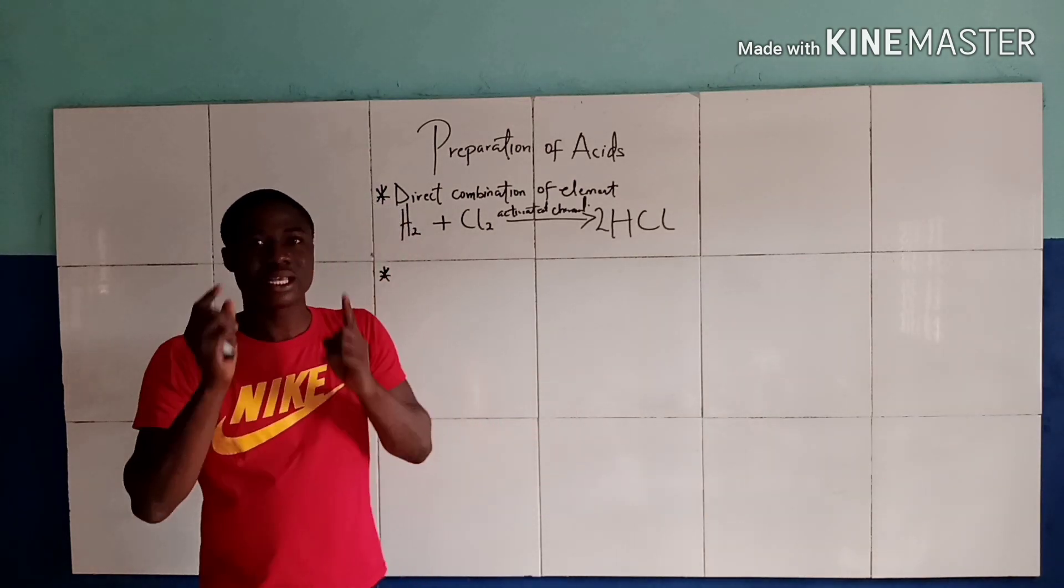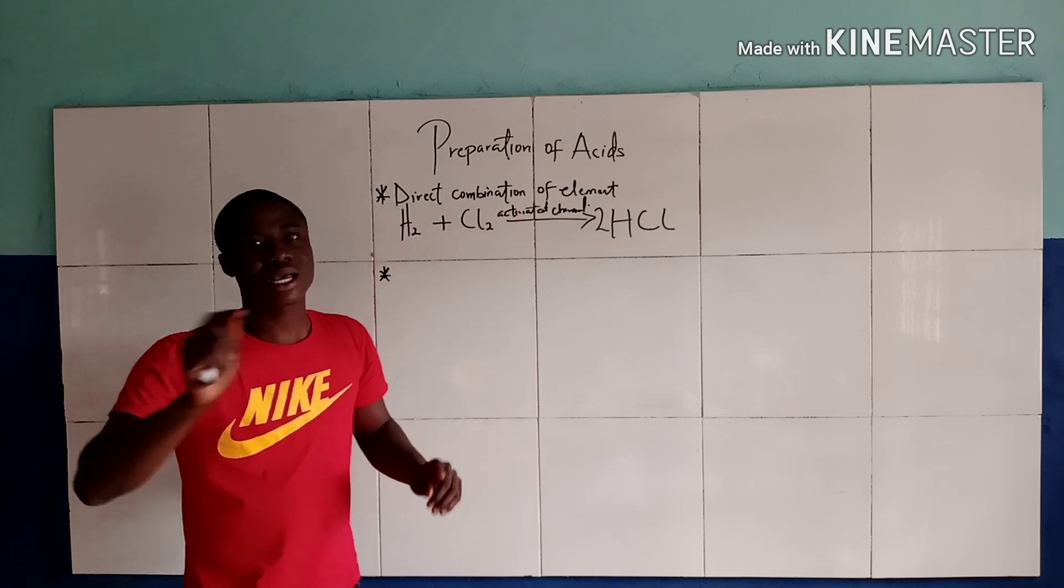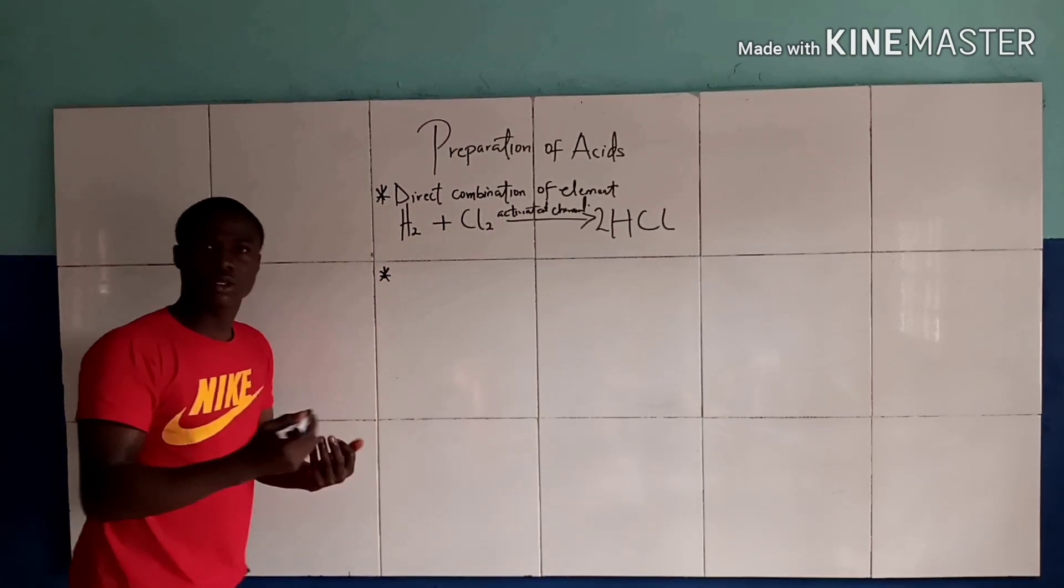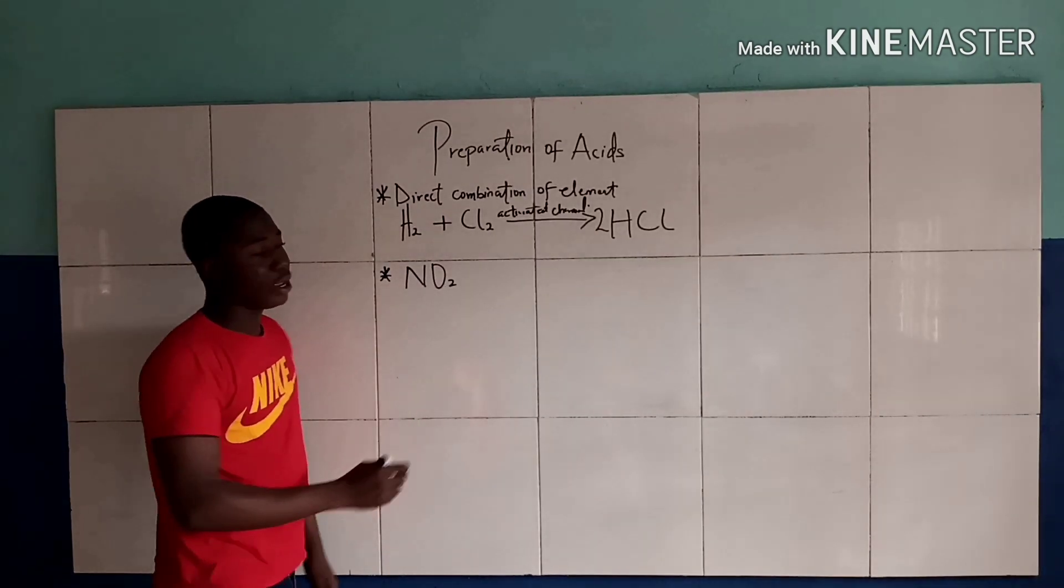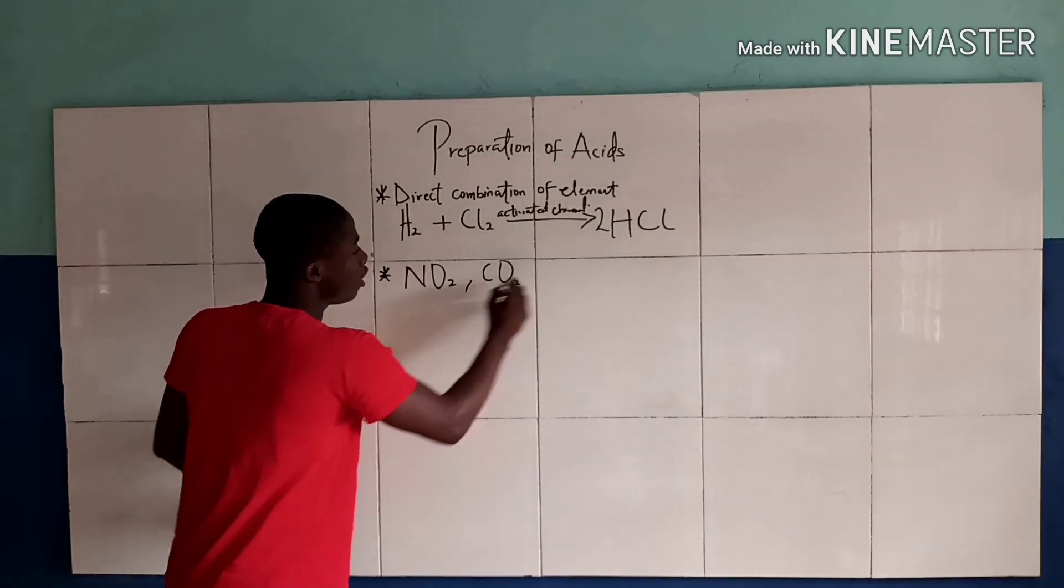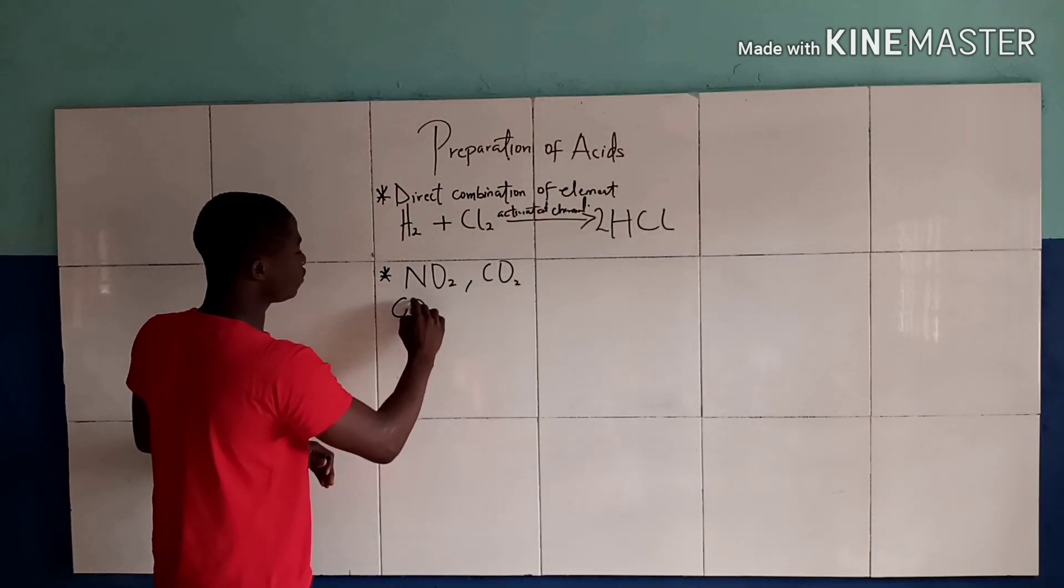What are acid anhydrides? Acid anhydrides are non-metallic oxides which when dissolved in water produce an acid. Examples of acid anhydrides include NO2 and CO2.